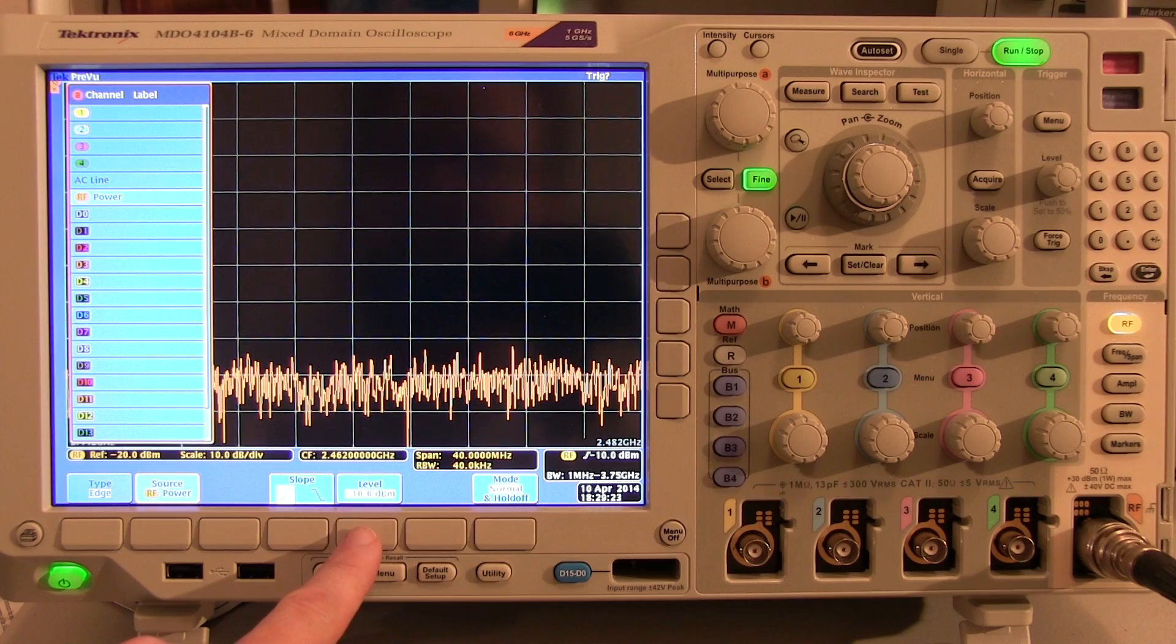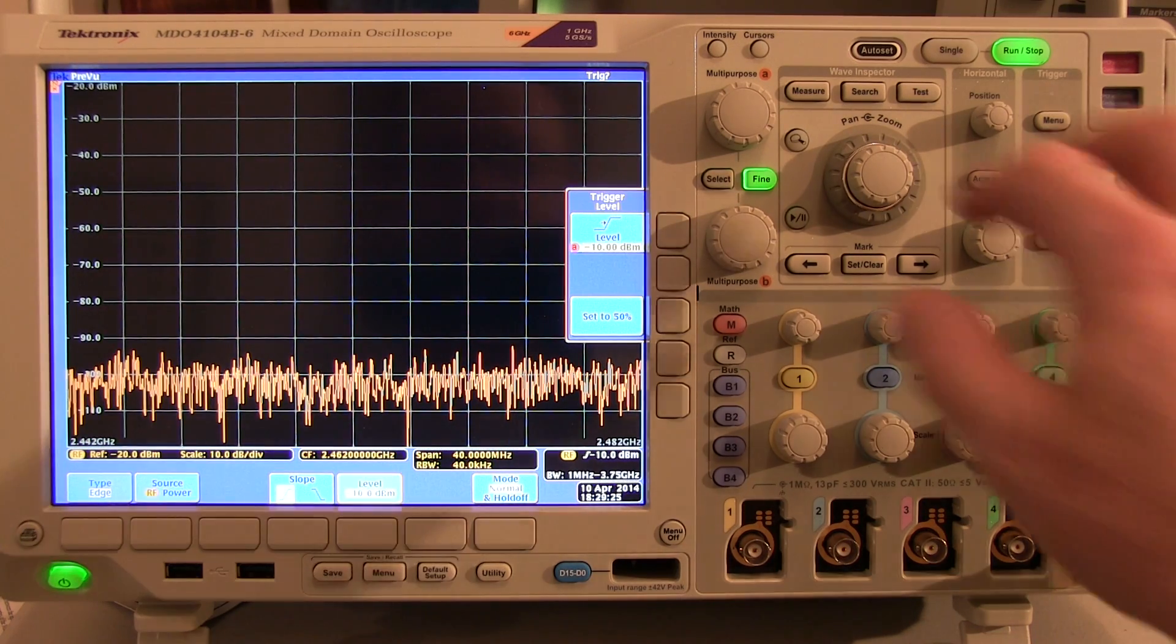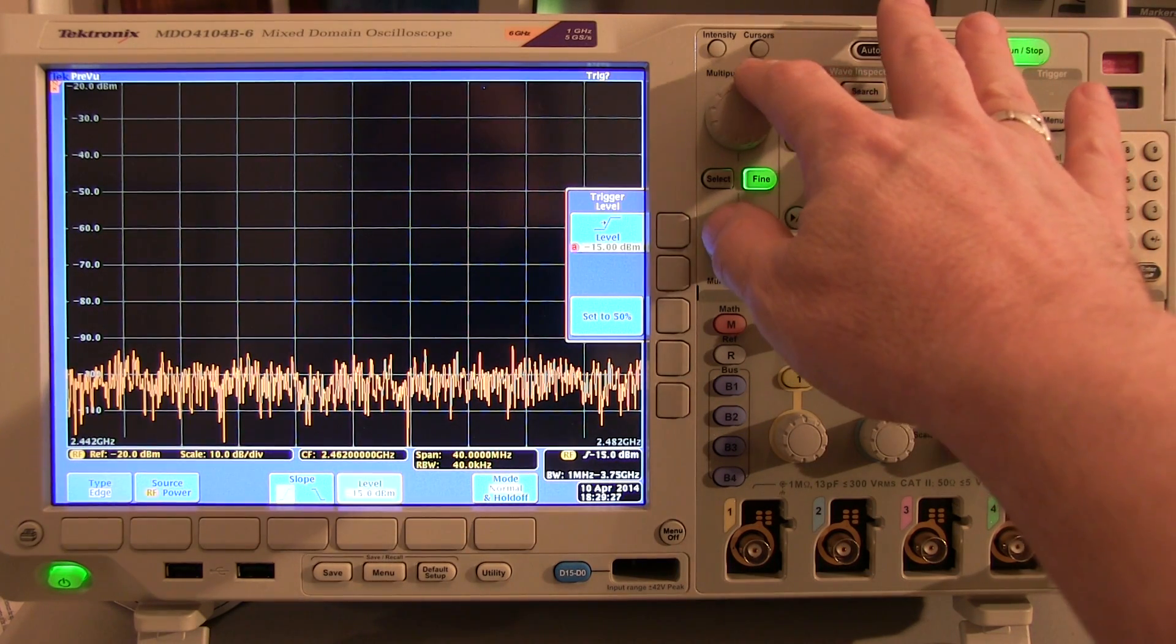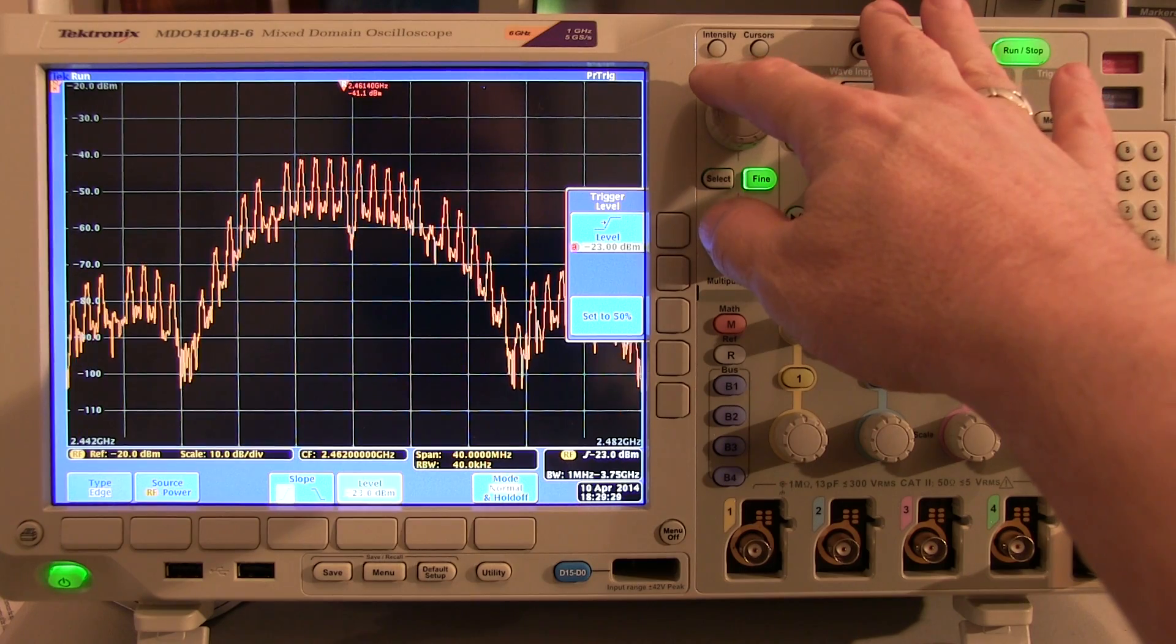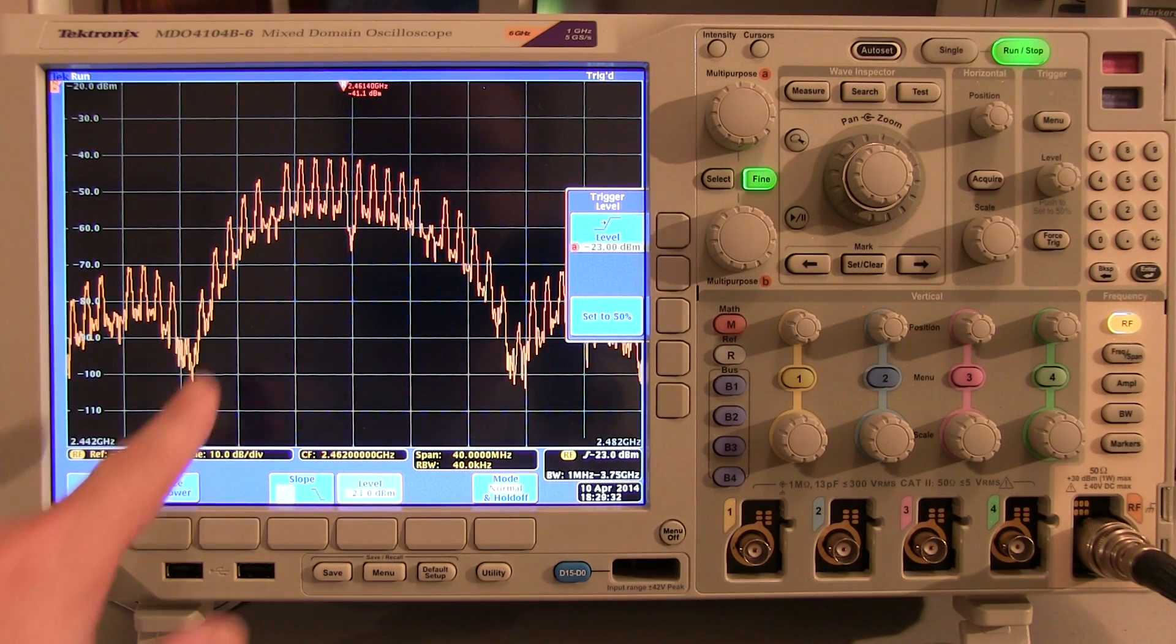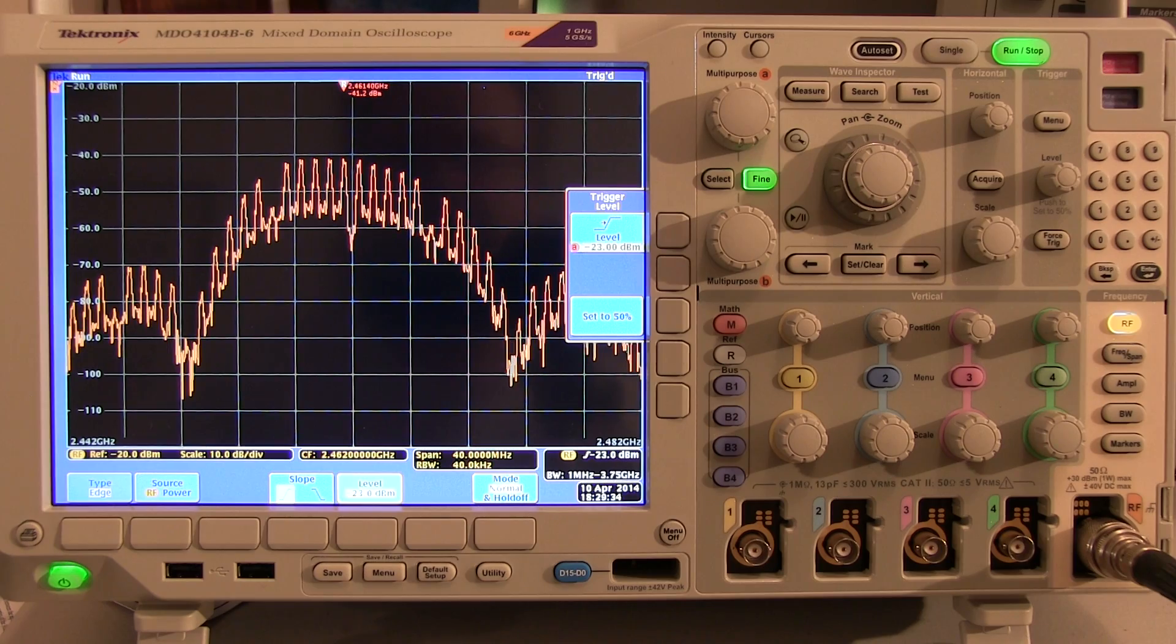So with that being said, we can now adjust the level that I want to trigger on. And as I roll this down, we'll actually reach a point where now I'm actually triggering on that RF signal, and I can actually see these bursts occurring pretty reliably.